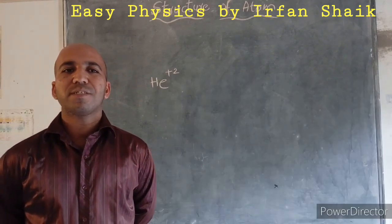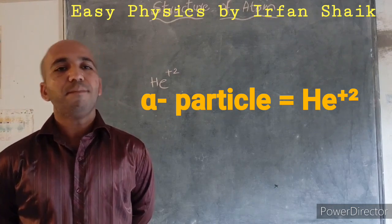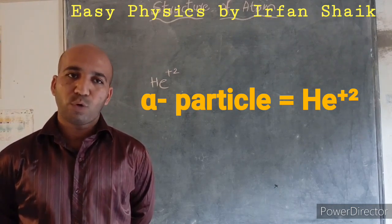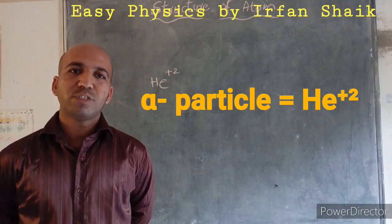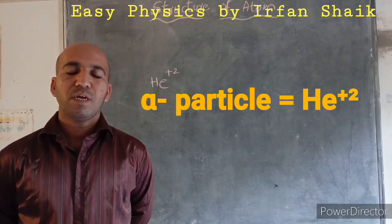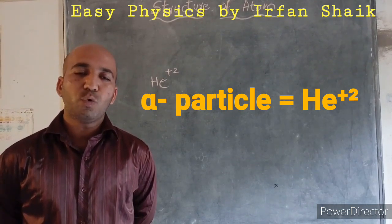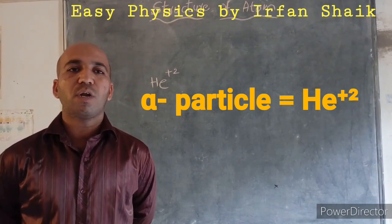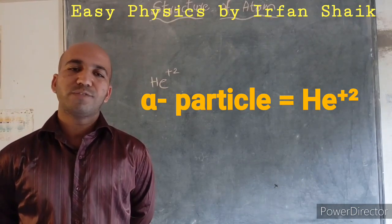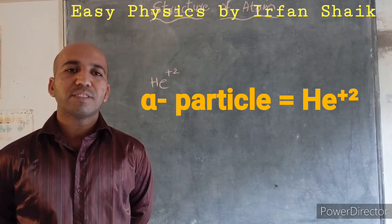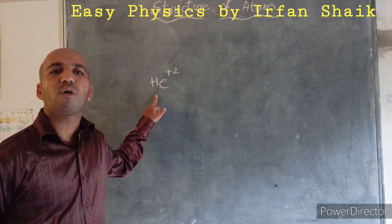What is an alpha particle? We know that the second element in the periodic table is helium. It is denoted by He. Helium has two electrons, two protons and four neutrons. If we remove two electrons from a helium atom, it will become as a positive ion. That is, it contains only two protons and four neutrons. So this is called an alpha particle. So He plus two, this particle is called as alpha particle.